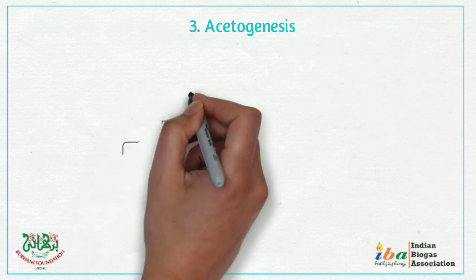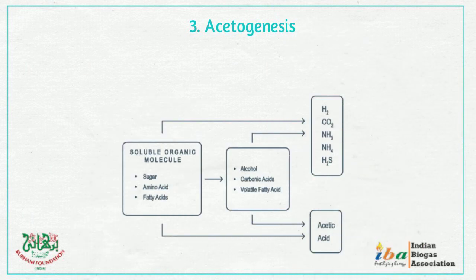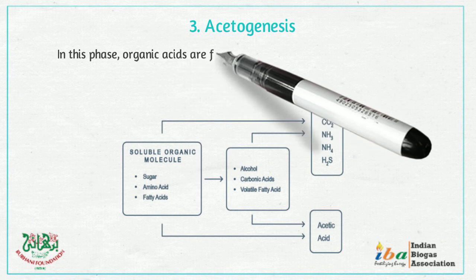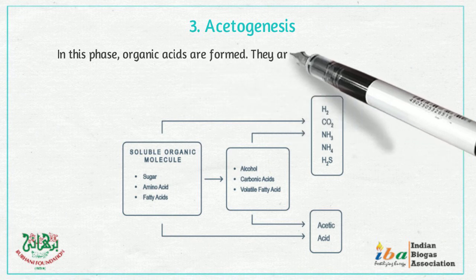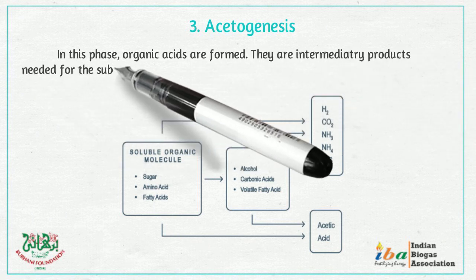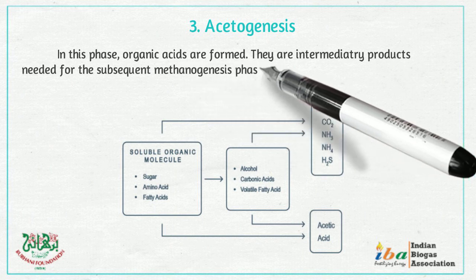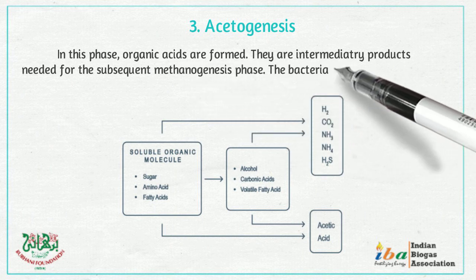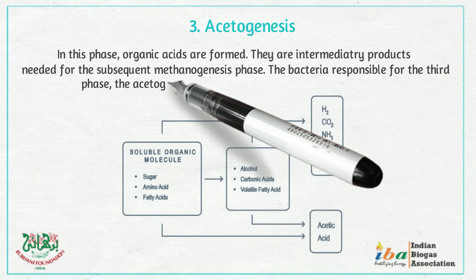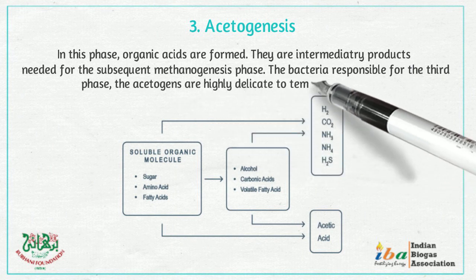3. Acetogenesis. In this phase, organic acids are formed. They are the intermediary products needed for the subsequent methanogenesis phase. The bacteria responsible for the third phase, the acetogens, are highly delicate to temperature variations.